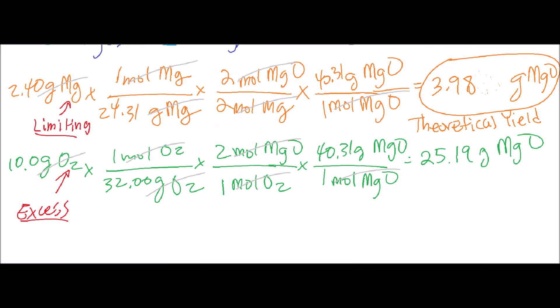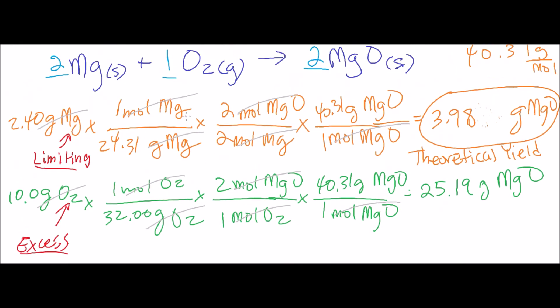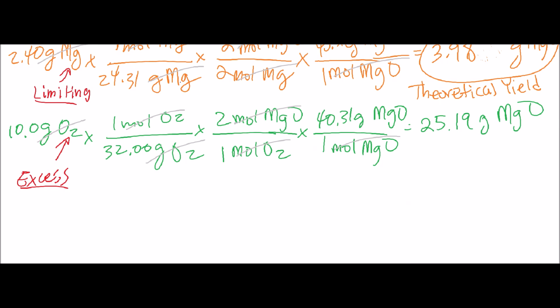Actually, I'm not done — the last part didn't just ask to identify the reagents; it also asks what is the mass remaining of the excess reagent. So let's finish this off. Oxygen is left over, but how much of it is left over? To answer that, we want to see how much of it actually got used up. We'll start with the moles of the limiting reagent.